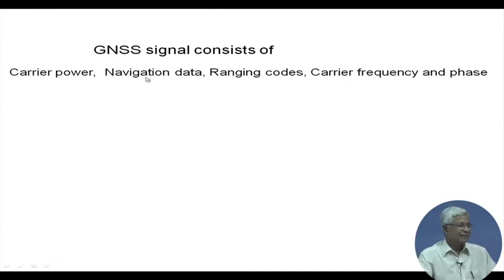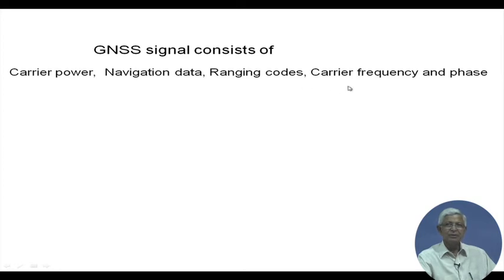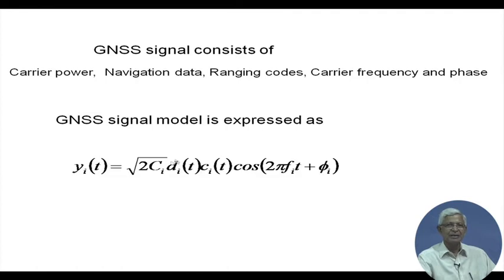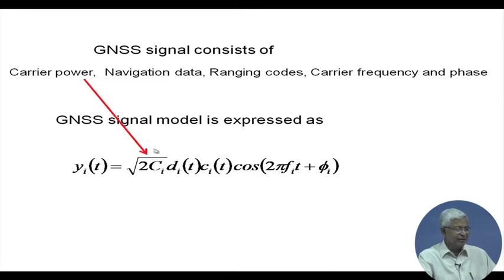The GNSS signal consists of carrier power, navigational data, ranging code, carrier frequency, and phase. Mathematically, the i-th satellite signal y_i(t) is expressed as root(2C_i) times d_i(t) times c_i(t) times cos(2*pi*f*t + phi), where root(2C_i) is the carrier power component, d_i(t) is the navigation data being broadcast — containing satellite ephemeris and other models and polynomials.